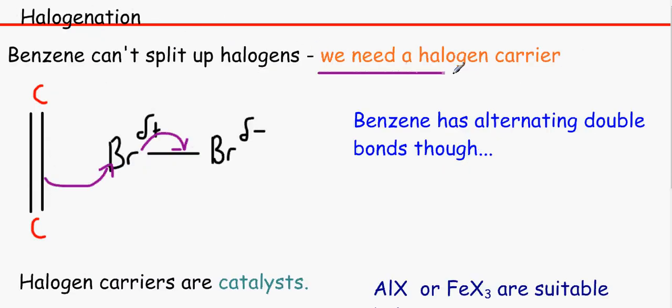So what happens? We need a halogen carrier. As you probably noticed, when we add bromine to an alkene, we separate the bonds. And we've got the transfer of electrons to this bromine, and then the transfer of electrons to that bromine. And it splits up by heterolytic fission.